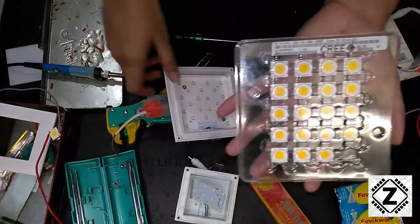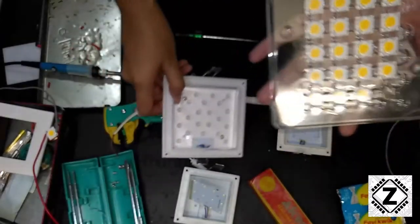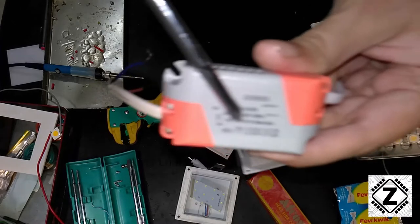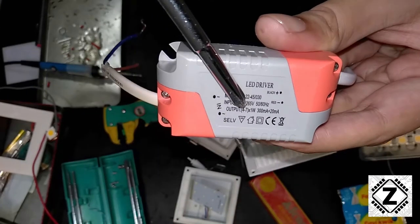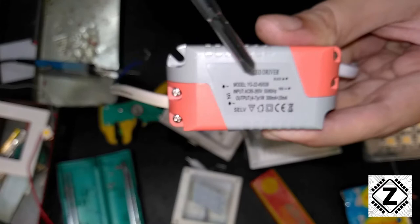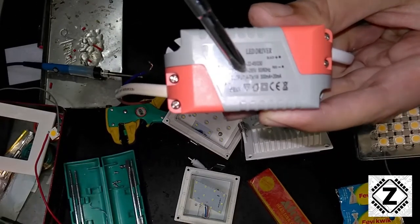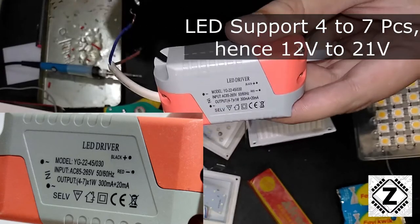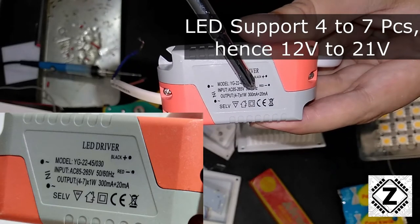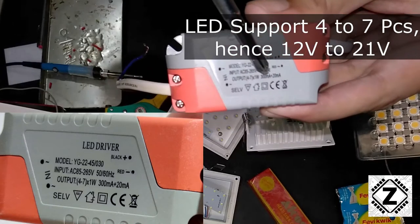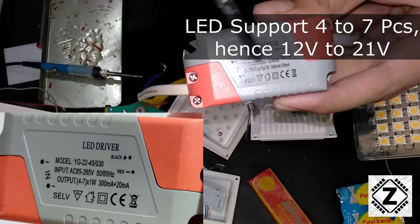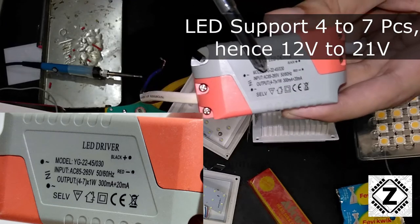This is how you buy COB arrays by comparing it with your driver. Let me explain it to you with a smaller kind of driver which I have here. The method is practically the same. As you can see, this driver supports somewhere between 4 to 7 LEDs. So 4 into 3, 12 volts, 7 into 3, 21 volts. So any LED which is between 12 volts to 21 volts can be used with this LED driver. The other specification is milliamps. 300 milliamps is the kind of industry standard for LEDs.